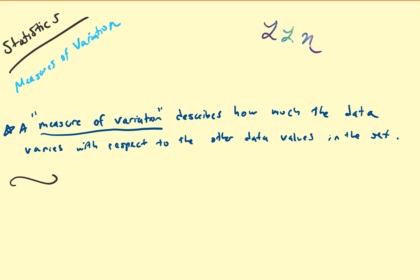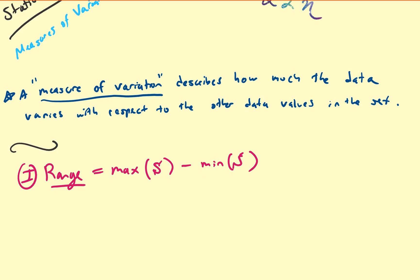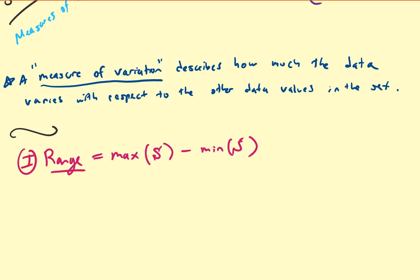Let's start with the easiest measure of variation, which is the range. The range — not to be mistaken with the mid-range — is the maximum of the data set minus the minimum of the data set. This tells us how spread out the data set is.